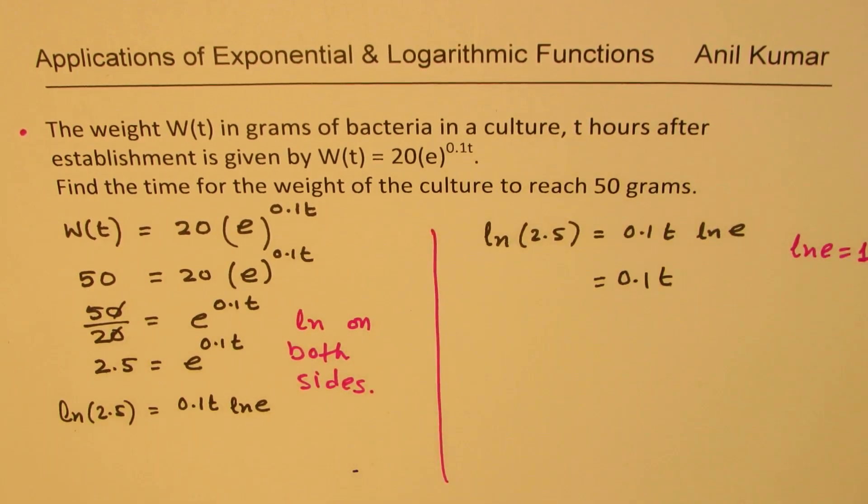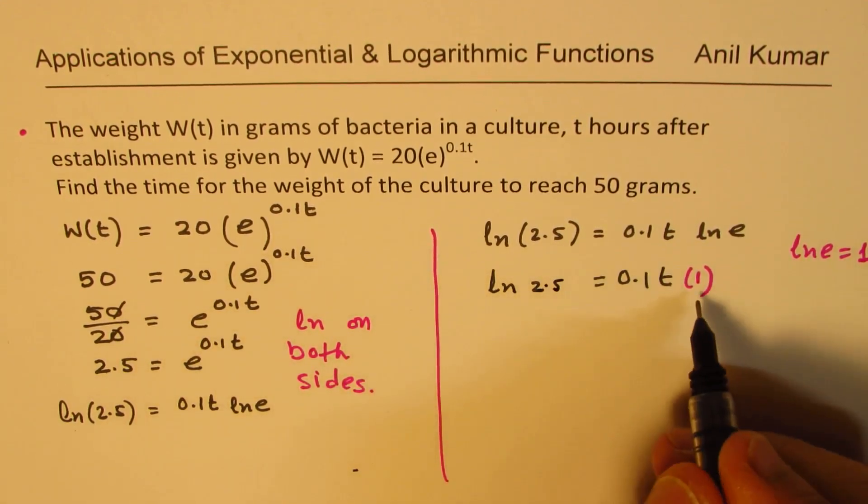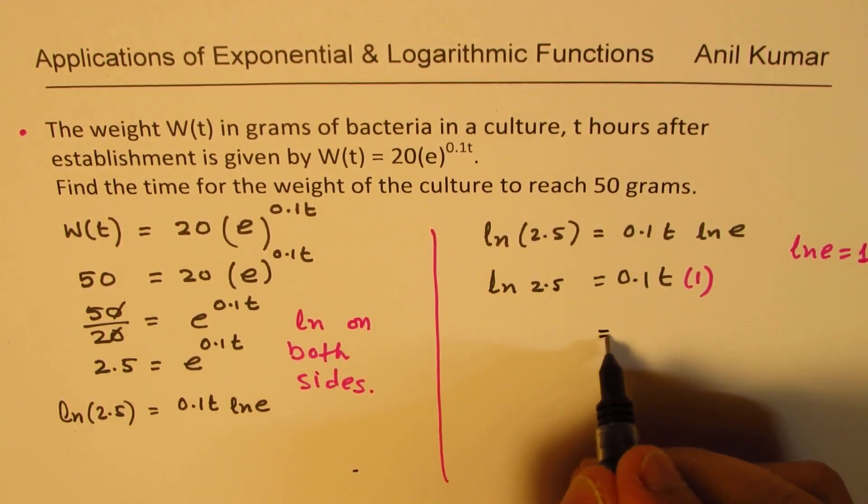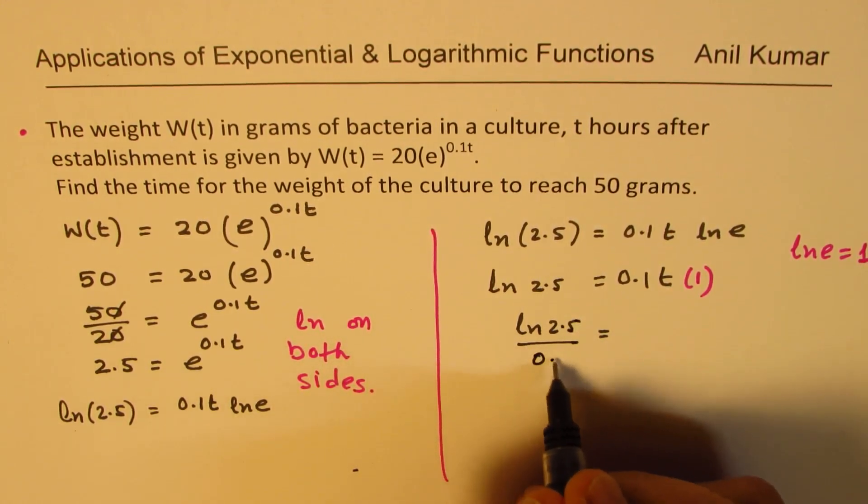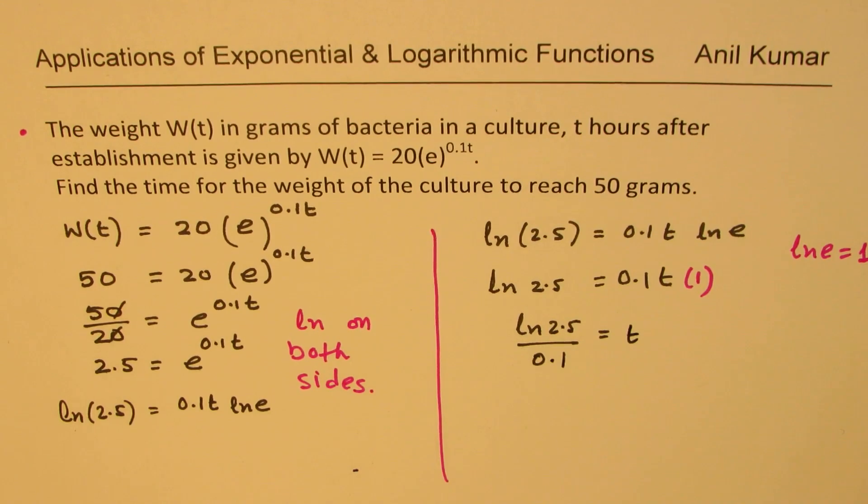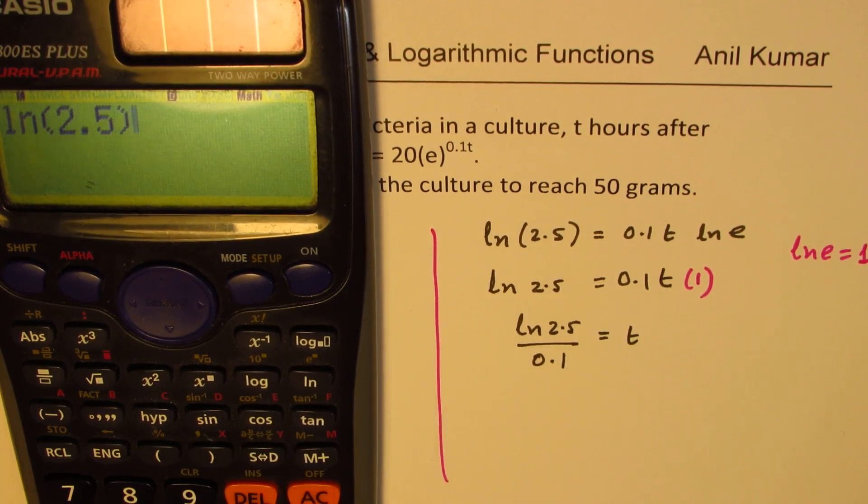So what is t equal to? From here, we can say ln 2.5 divided by 0.1 is t. So let's find this value. Natural log of 2.5 divided by 0.1 equals 9.16 equals t.